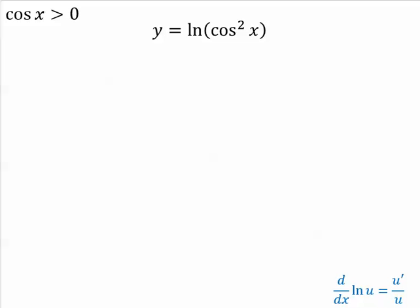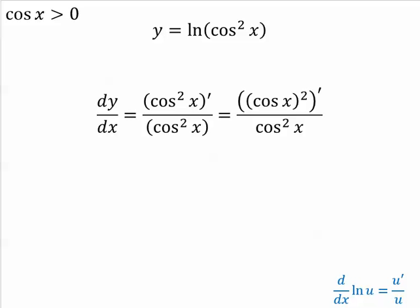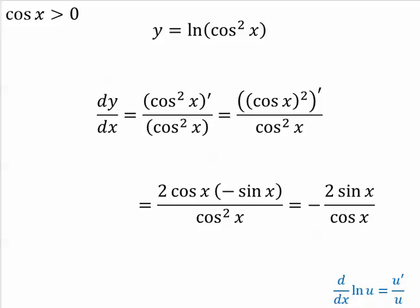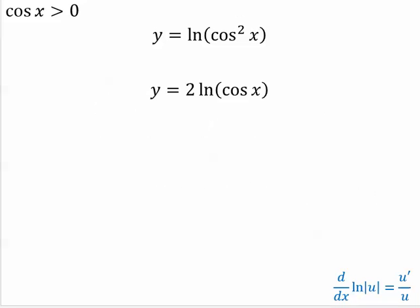y is equal to ln(cosine squared x). Before taking the derivative, I like to remind myself that cosine squared x is cosine x quantity squared. Now to take the derivative, you're going to bring down the 2, and then it will be cosine to the 1. Then the derivative of cosine is negative sine. Clean it up and you get negative 2 sine x over cosine x.